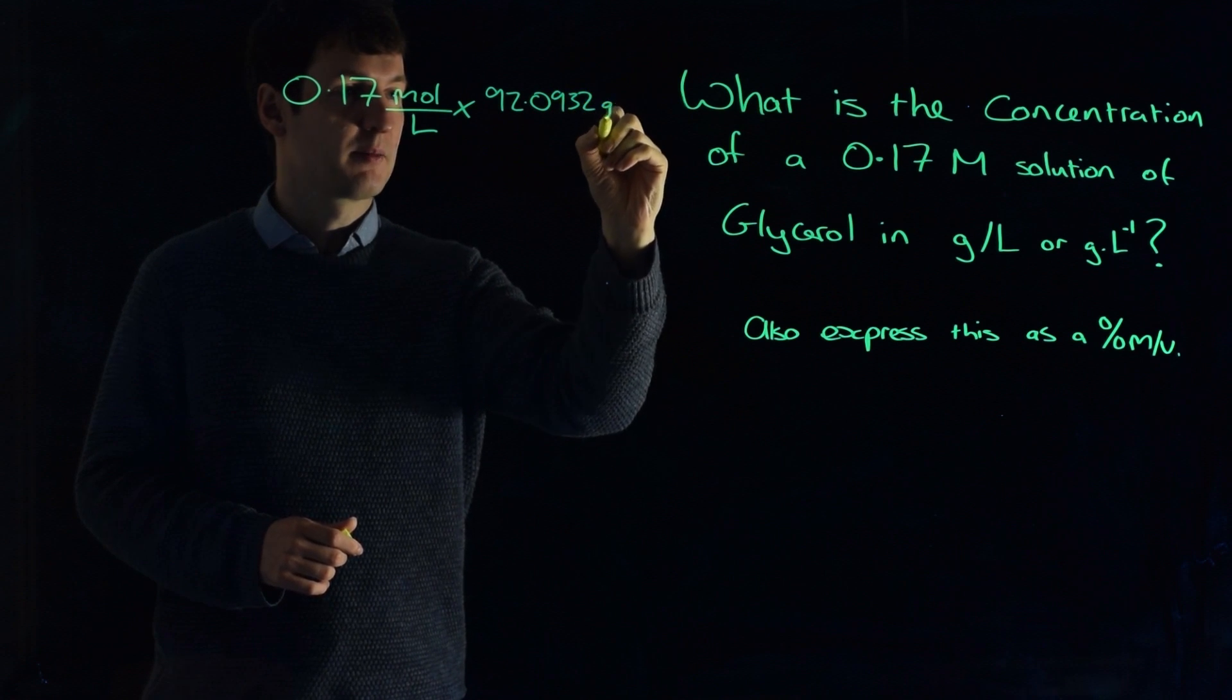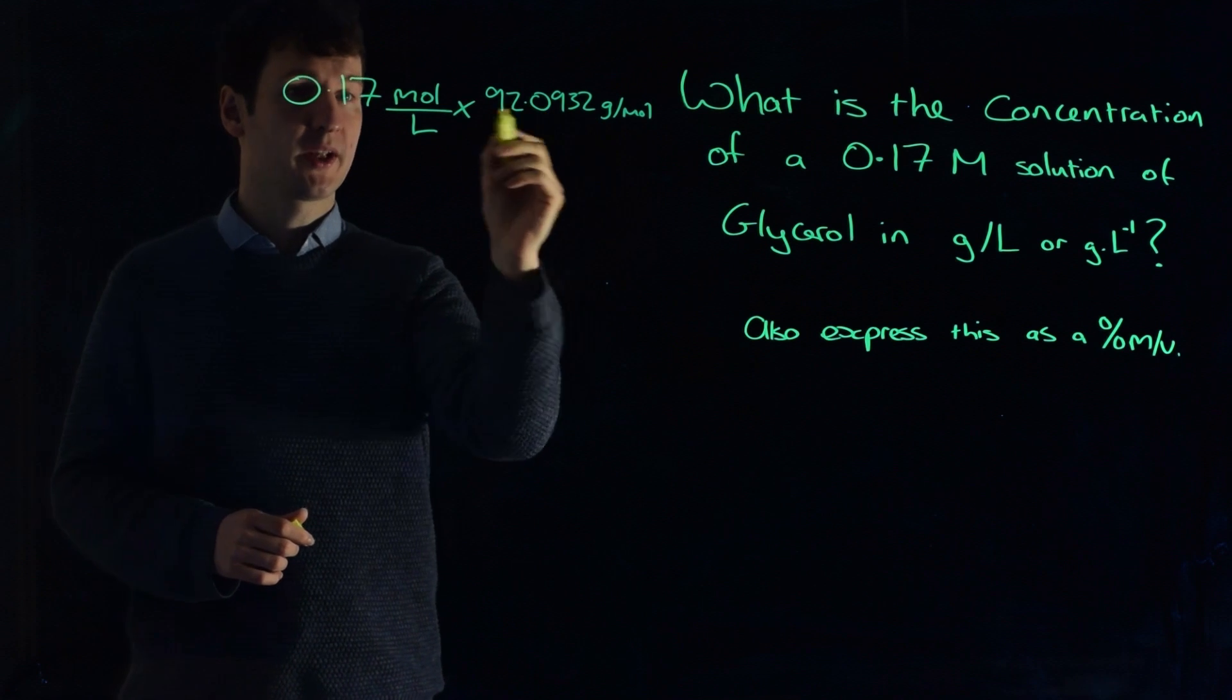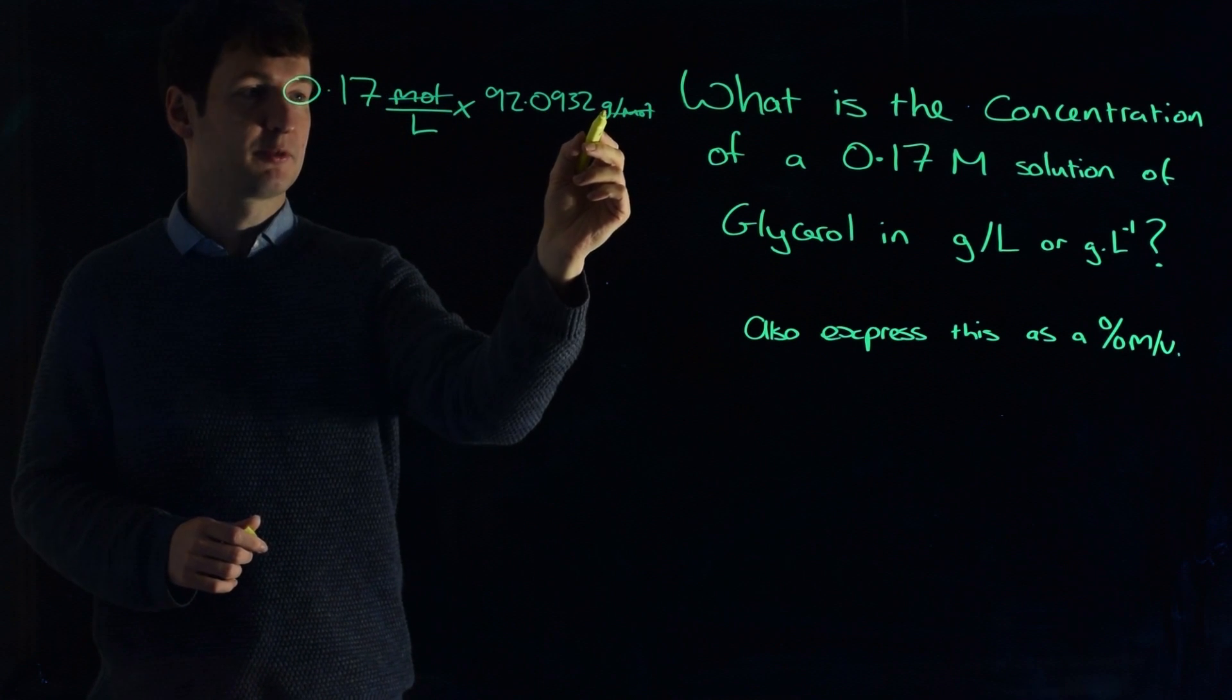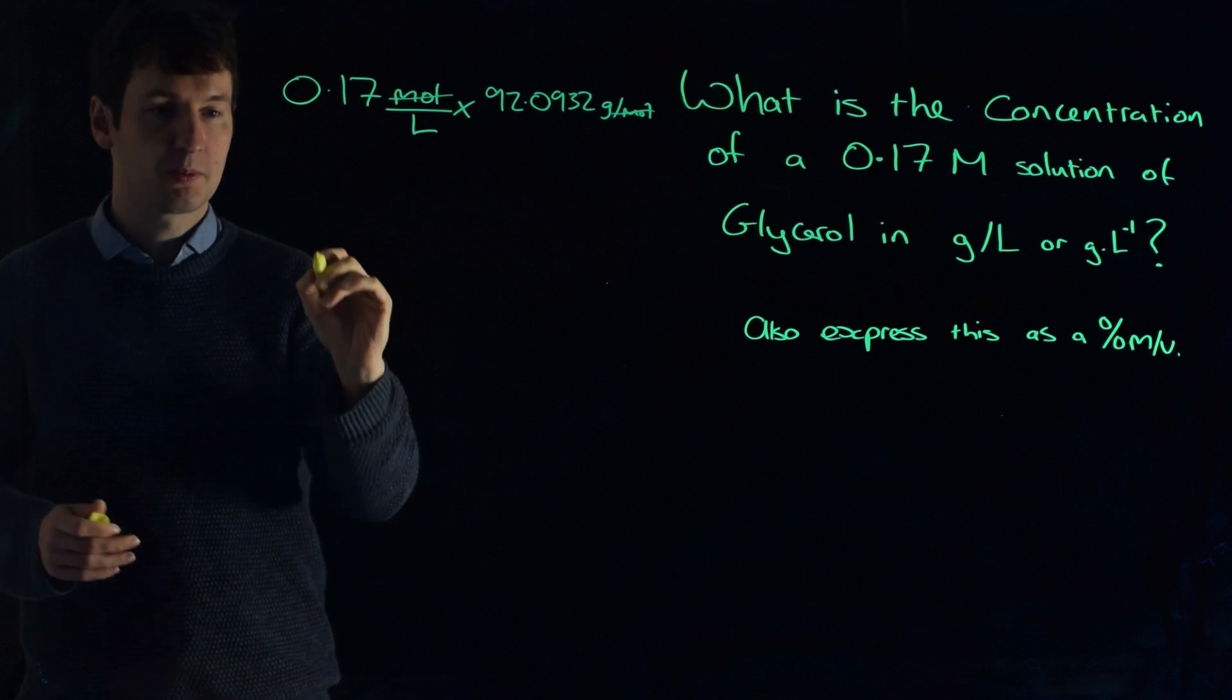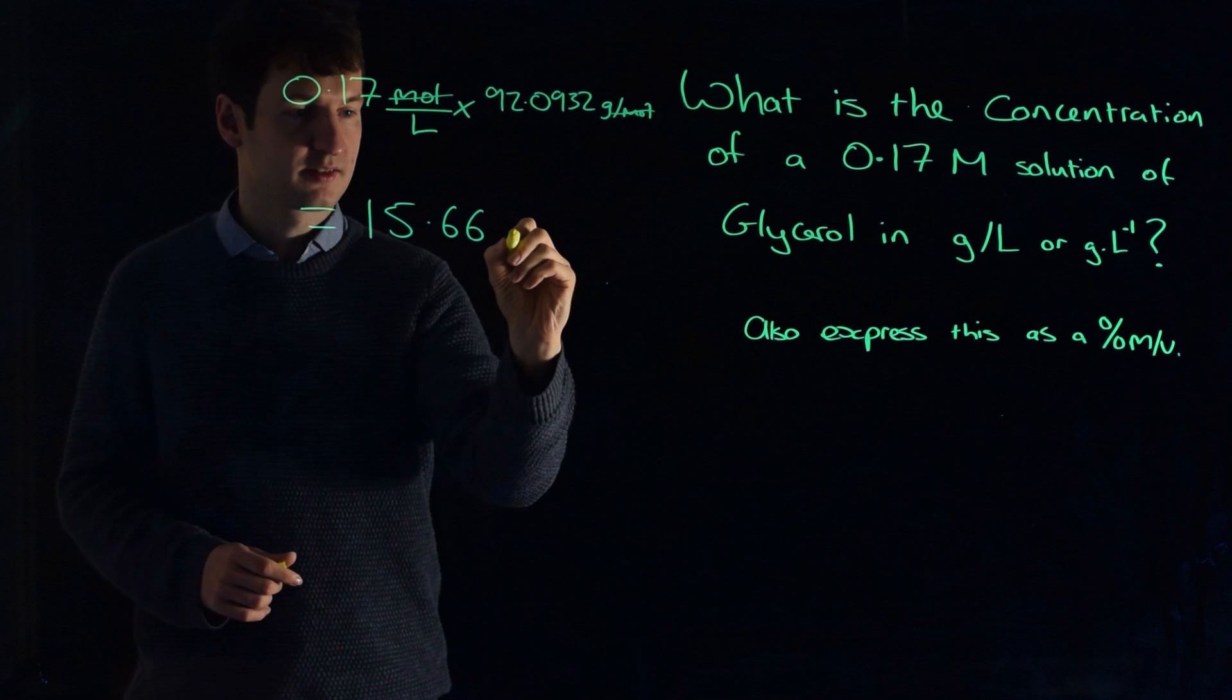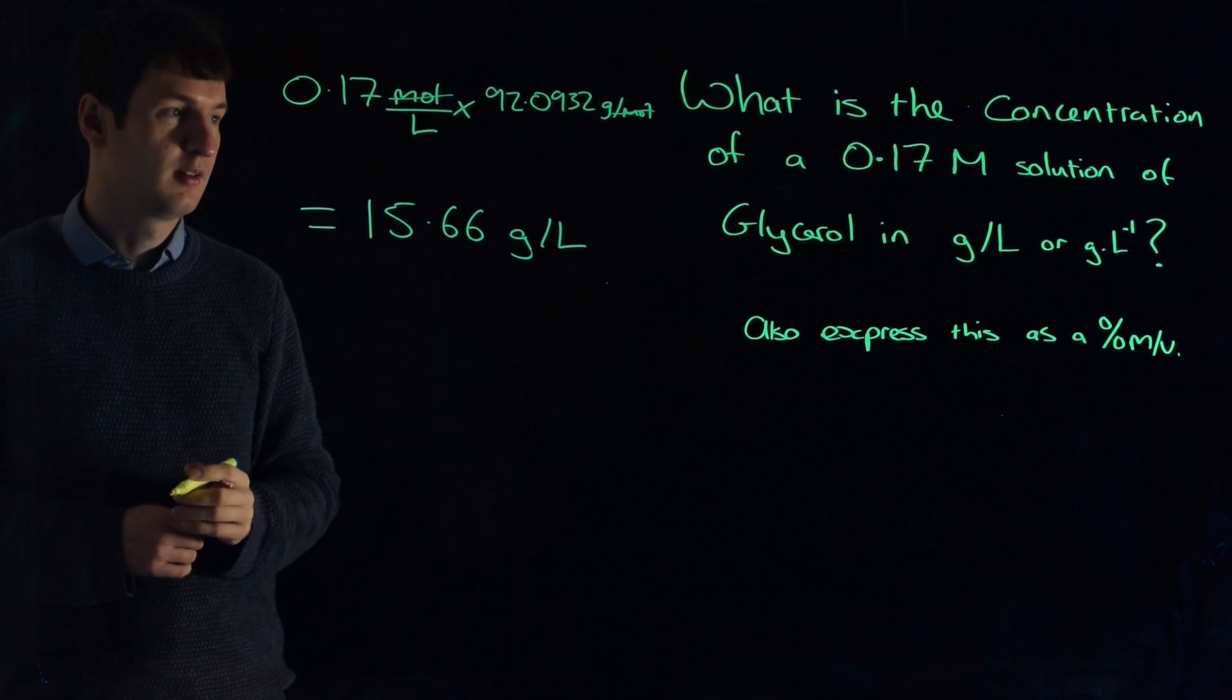92.0932 grams per mole. We can see now that moles and per moles are going to cancel out, and we're left with grams per liter. If we put that into the calculator, it will be 15.66 grams per liter. Problem solved.